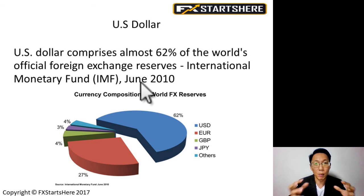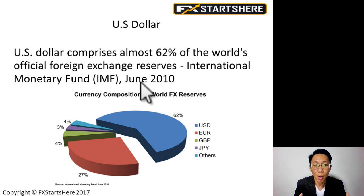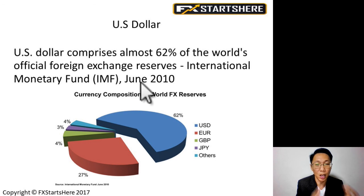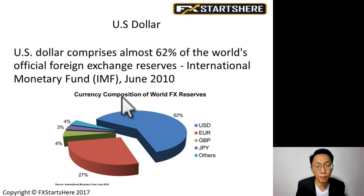A lot of countries view the United States economy as very strong, so they would like to keep U.S. dollars in their foreign exchange reserves. If a country has a weaker economy, they do not want to keep their reserves in their own country's currency. They want to protect themselves by keeping part of their reserves in U.S. dollars, part in euro, and part in pound or Japanese yen — some other stronger economy's currency — which protects the country from an economic crisis.